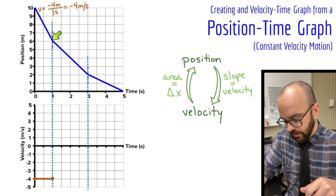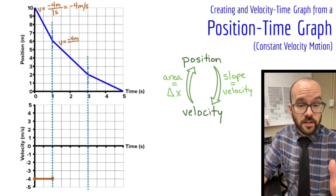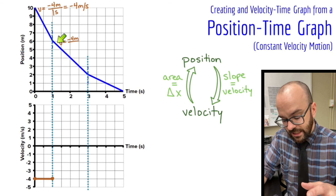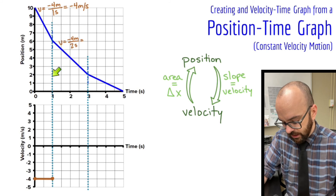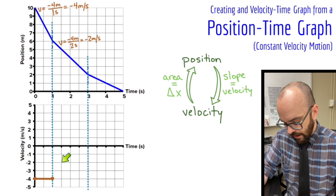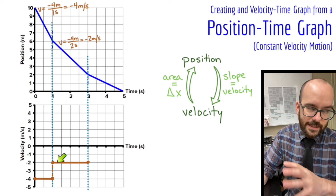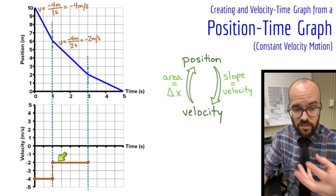In the second interval, my speed changes. Starting at a position of six, I go down to two — a change of negative four meters — but it takes two seconds. Negative four over two seconds gives a velocity of negative two meters per second. My velocity instantly changes from negative four to negative two meters per second, so I graph that as a horizontal line and draw a dotted line to show the instantaneous jump in velocity.